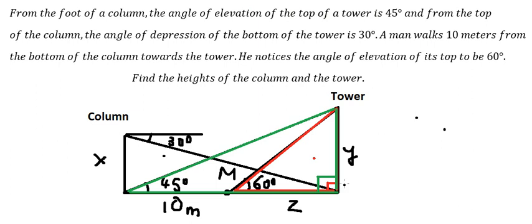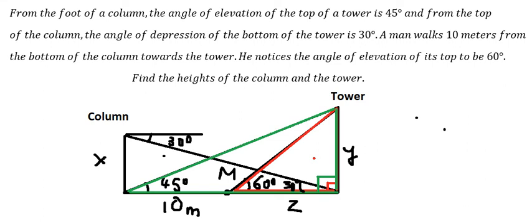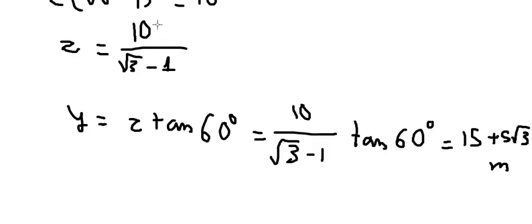After we find Y, now we can find the value of X. We know that this line is parallel to the other one, so the angle here is also equal to 30 degrees. I use blue color to highlight this triangle. We have 30 degrees and we have 10 plus Z, so we can find the value of X.